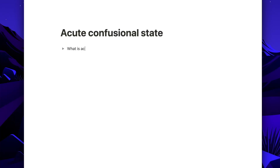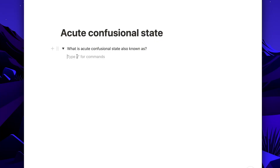So if I'm making a deck on acute confusional state, for example, I might have one card which says 'What is acute confusional state known as?' — that will correspond to the front of my Anki card. Inside the toggle I include the answer, so I might put 'delirium' inside the toggle.